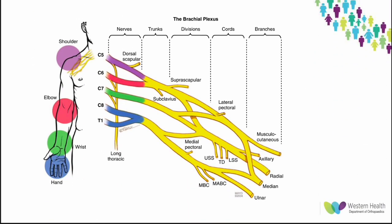Brachial plexus is an arrangement of nerve fibers formed by the anterior or ventral rami of C5 to T1 nerve roots, which supplies the entire upper limb. It is arranged into five distinct sections including the roots, trunks, divisions, cords and branches.